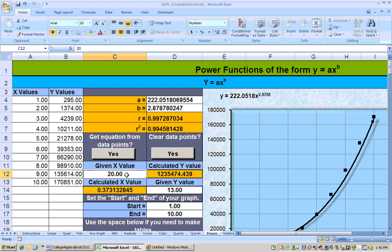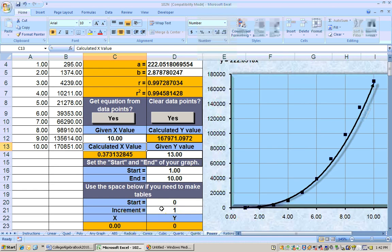And if we did 10 for the year 1990, we see that it's pretty close to the actual number. Here it's 167,971. Here it's 170,851. So it's coming pretty close to the data points. And you can adjust the start and end, and you can make tables of values.